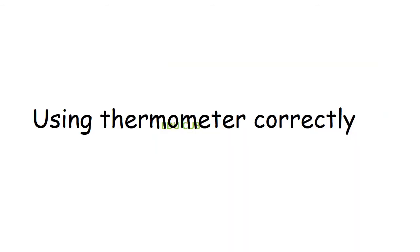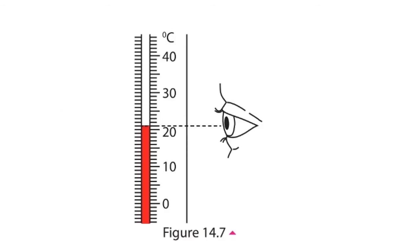Now we have discussed about how to use a thermometer correctly. There are three steps to keep in mind. First, the thermometer should be held vertically so that the bulb is well in contact with the substance or liquid being measured. Second, when taking readings, the thermometer should be adjusted to eye level. Third, the eye should be kept correctly in line with the mercury column. Otherwise, if you observe from below or above, the reading will be incorrect.